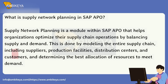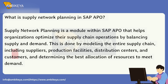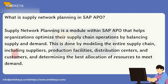What is Supply Network Planning in SAP APO? Supply Network Planning is a module within SAP APO that helps organizations optimize their supply chain operations by balancing supply and demand. This is done by modeling the entire supply chain — including suppliers, production facilities, distribution centers, and customers — and determining the best allocation of resources to meet demand.